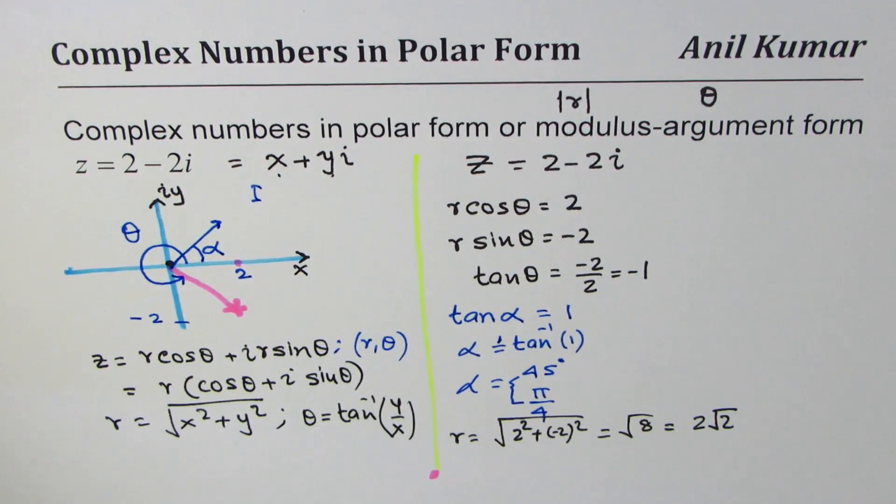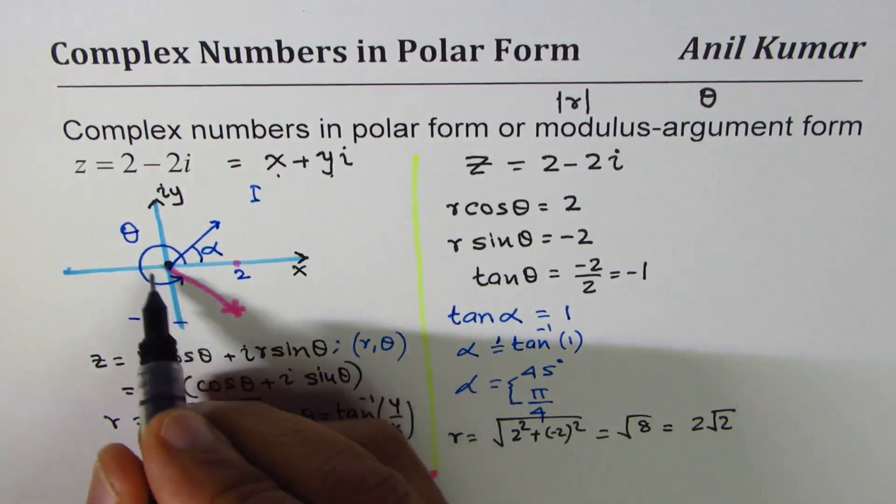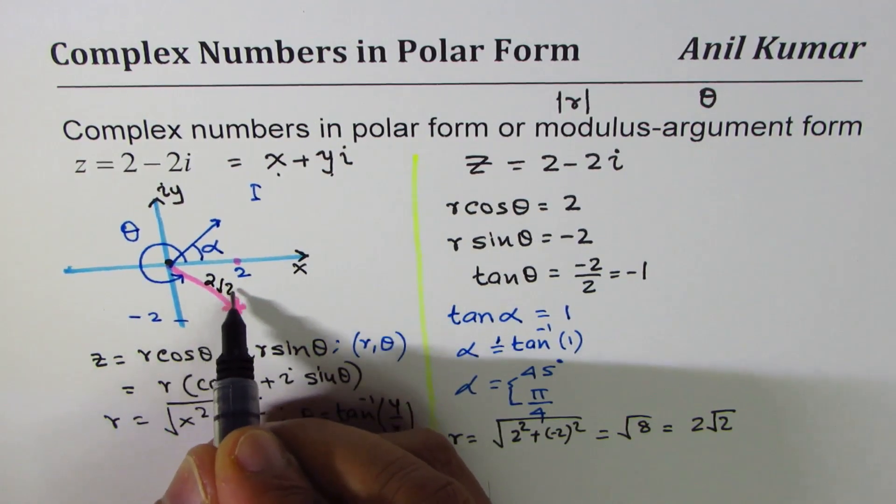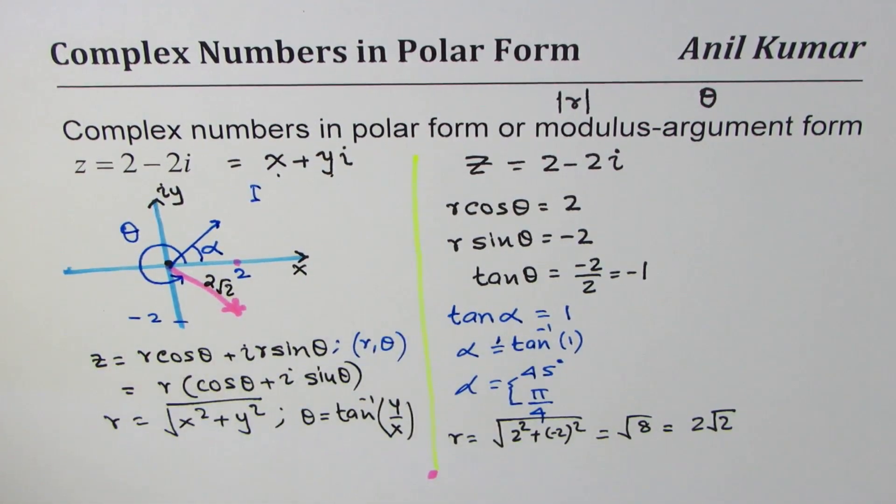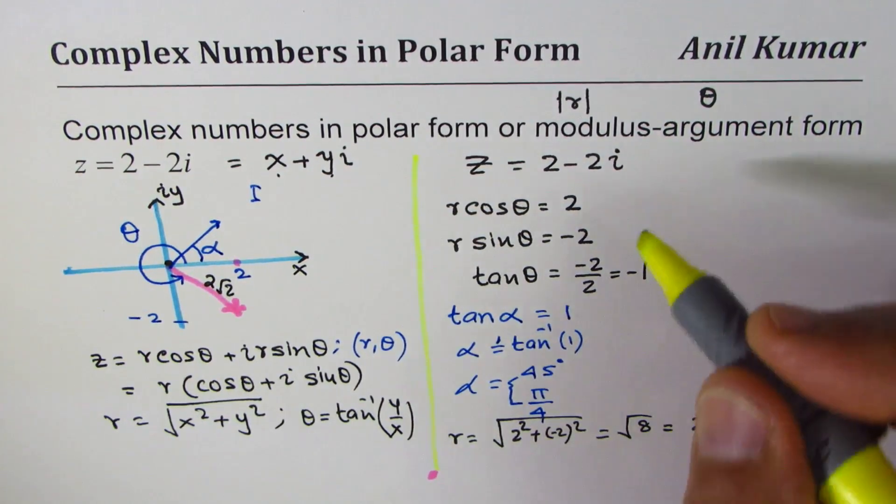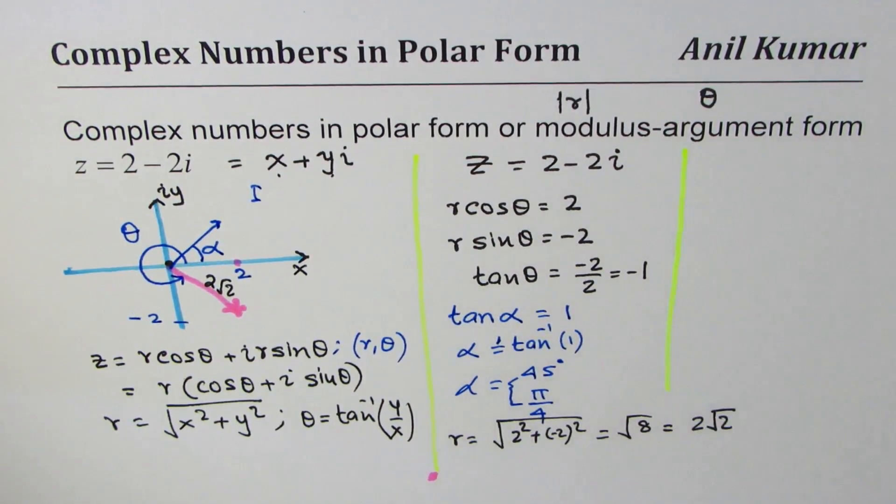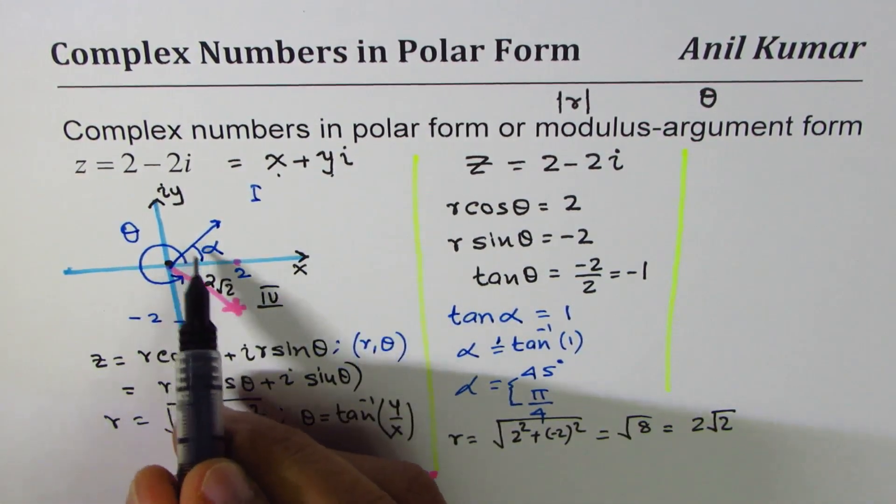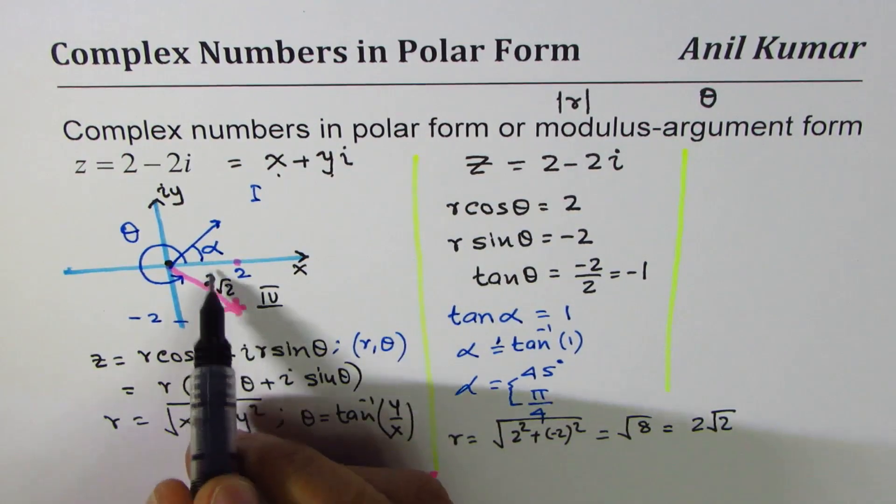So r is 2 square root 2 for you. So this z, this is 2 square root 2. We have to find still, we have already found the angle but let me see how to write theta. Now when you are in quadrant 4 and alpha is known to you, then what is theta?